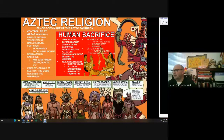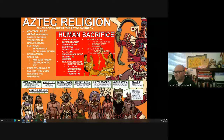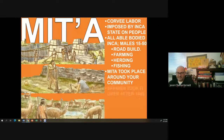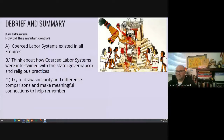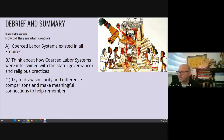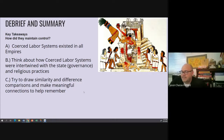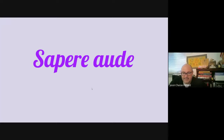That's about all we cover in class for the Songhai. To wrap up: labor systems existed in all the empires — think about how they're intertwined with state governance, control, and ruling, and how they're interrelated with religious practices. Try to make connections: who is similar to whom, and how are they different? If you're staying on, I'll give you some additional information; if not, goodbye and thanks.